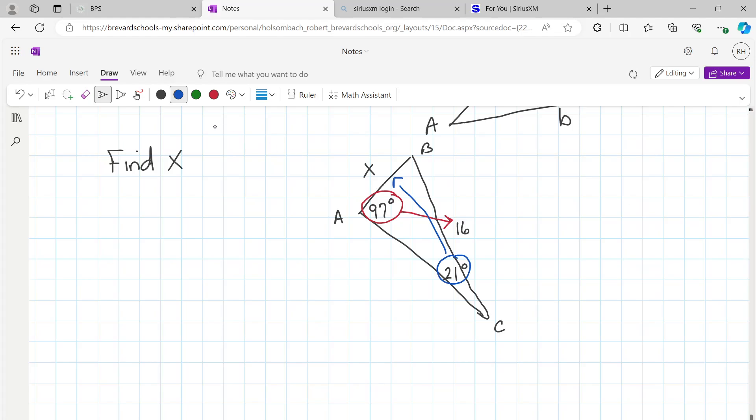So we can write a proportion. We can say the sine of 97 over its opposite side, which is 16, equals sine of 21 over its opposite side. And in this case, its opposite side is the x that we're trying to find.